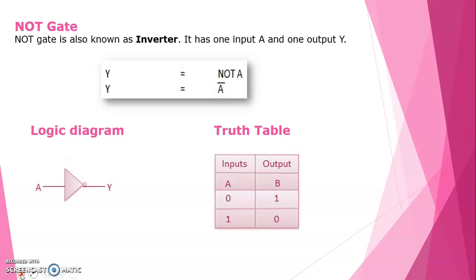Next is the NOT gate, which is an inverter. It has one input A and one output Y. Y can be written as NOT A, otherwise Y equals A bar. In the logic diagram, if the input is 0 then the output is 1; if the input is 1 then the output is 0. You can see the small circle after the triangle in the logic diagram.